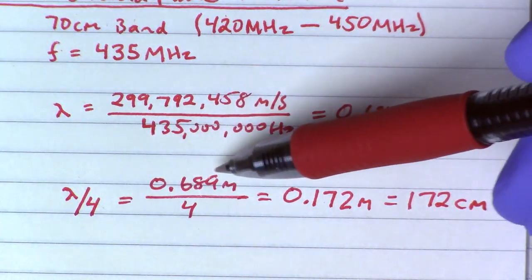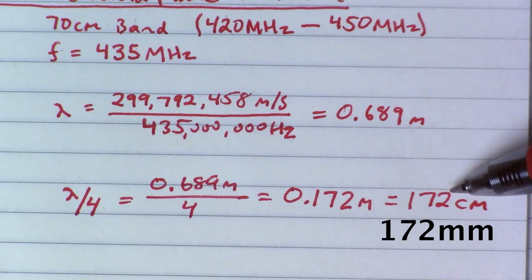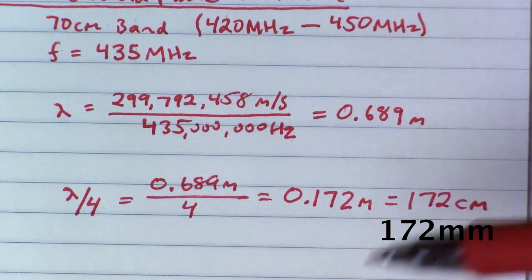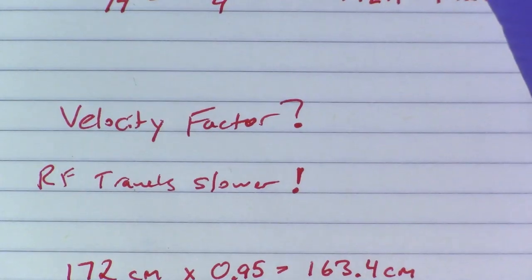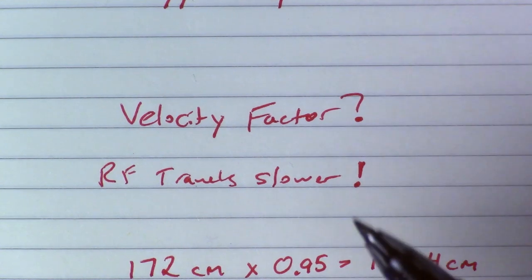Now we can see that at one quarter wavelength, we have to divide that number we just calculated by four that gives us 172 centimeters for our radiating element length, the center conductor length. The radials will calculate in a second, they're a little bit different. RF travels at different speeds through different materials. Copper happens to be 95% the speed of light. That's going to change the length. It's going to shorten it a little bit.